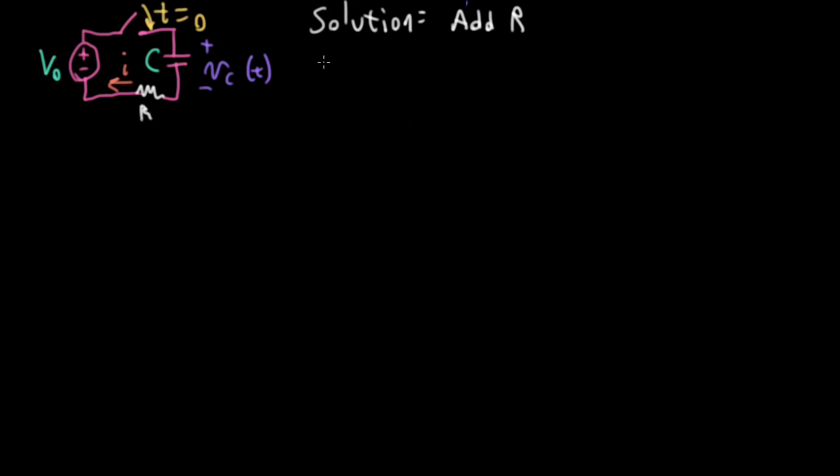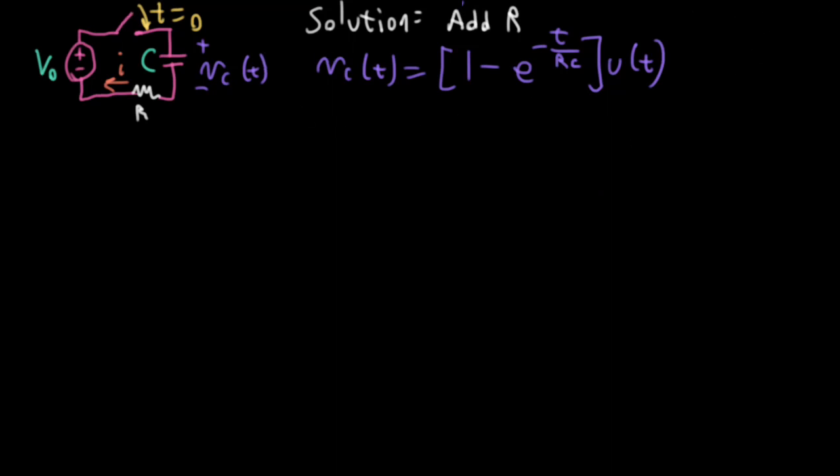So now what is the voltage across the capacitor? Well, this is now going to be your standard charging capacitor. So, this will have a form of 1 minus E to the minus T over our time constant RC whole thing times a unit step function UT. And I have to be careful to remember to multiply this by V0.